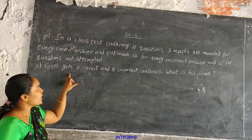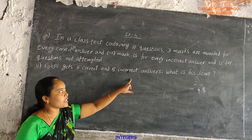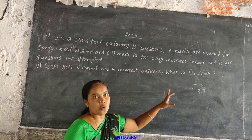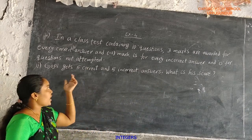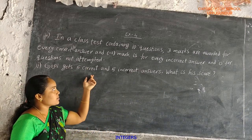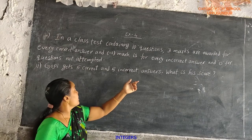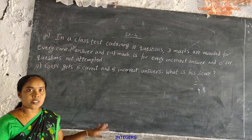First one: Gopi gets 5 correct and 5 incorrect answers. What is his score?